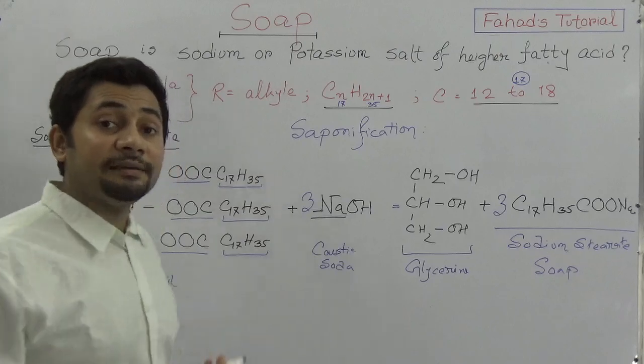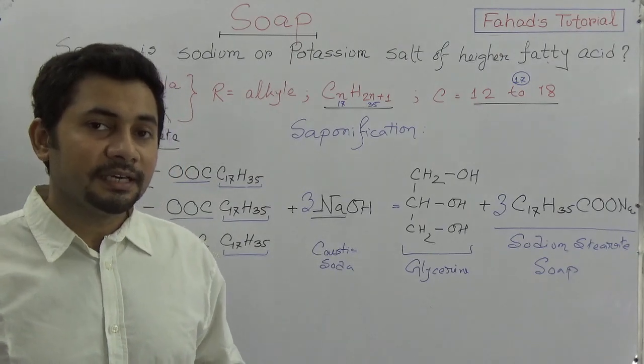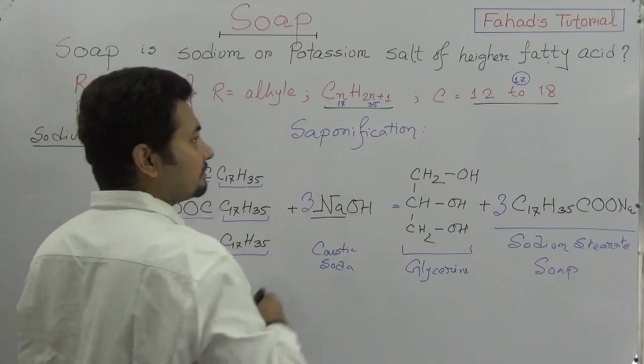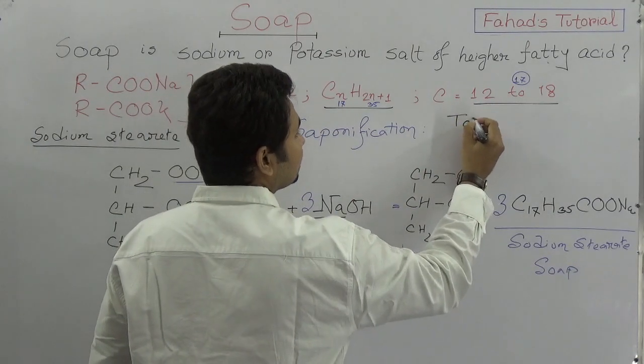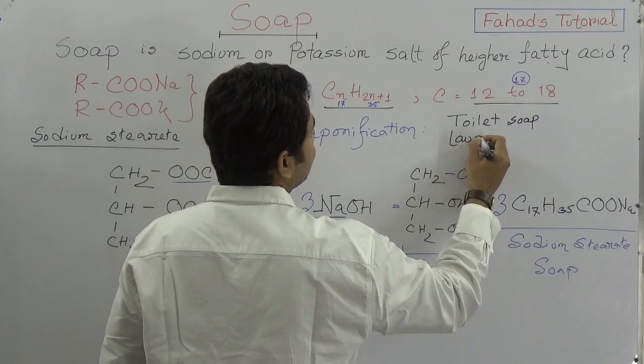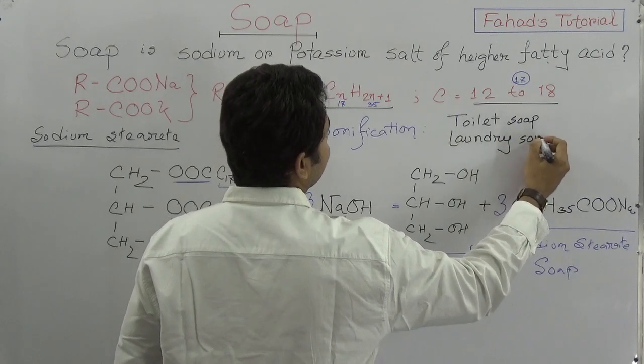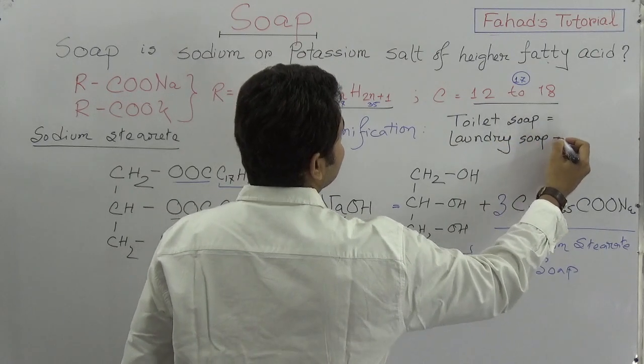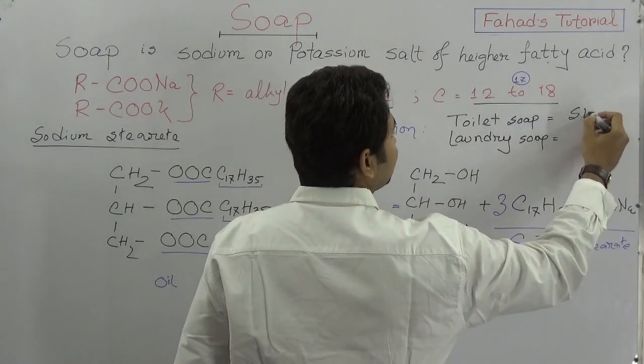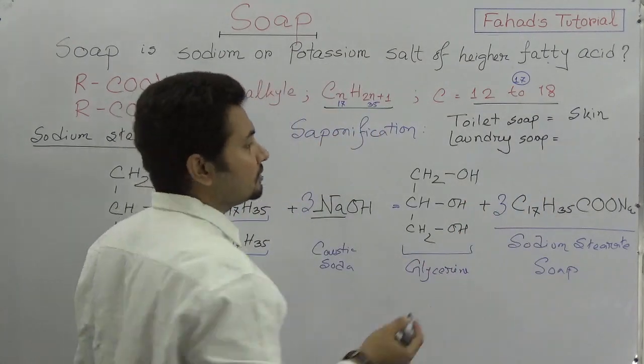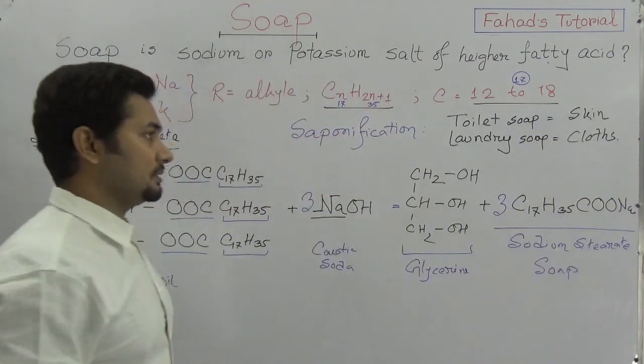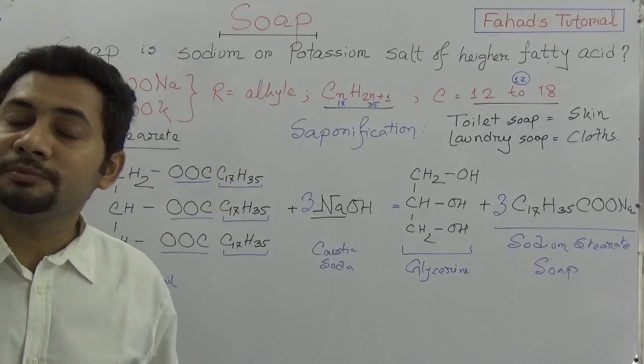The types of soap are two types: toilet soap and laundry soap. This is the main division. The toilet soap is usually for cleaning our skin. The laundry soap is usually used for cleaning our clothes.